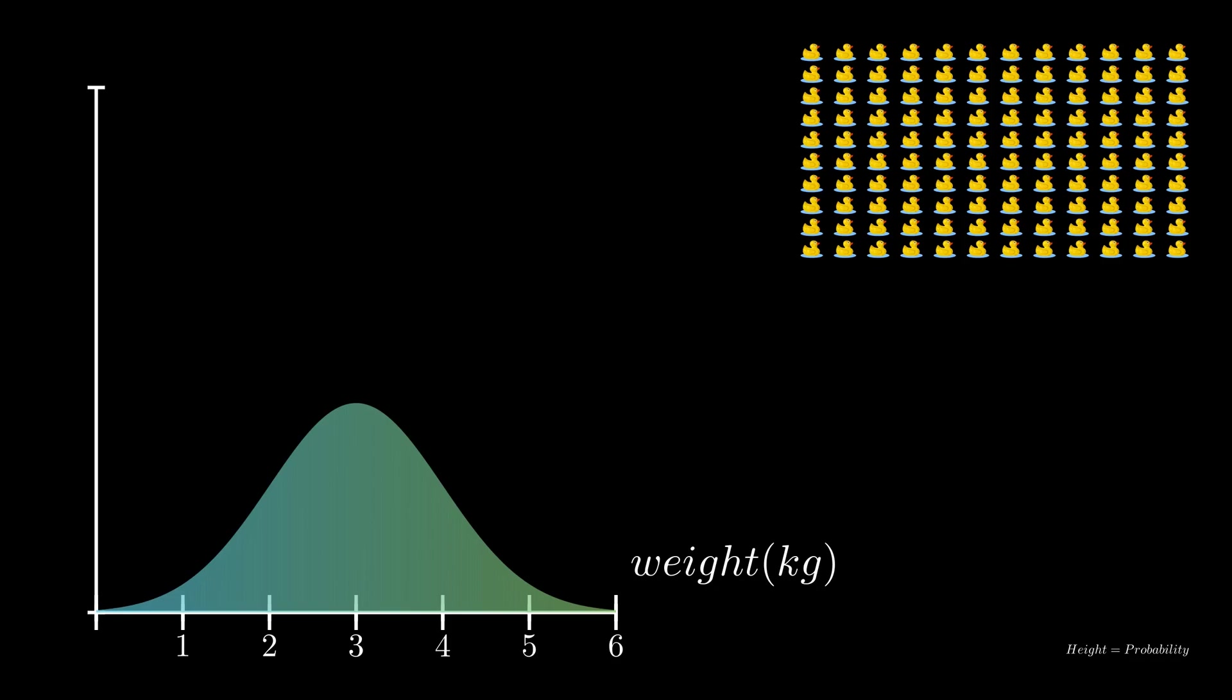This is what's known as a probability density function, where without getting into too much detail, the area becomes the probability.